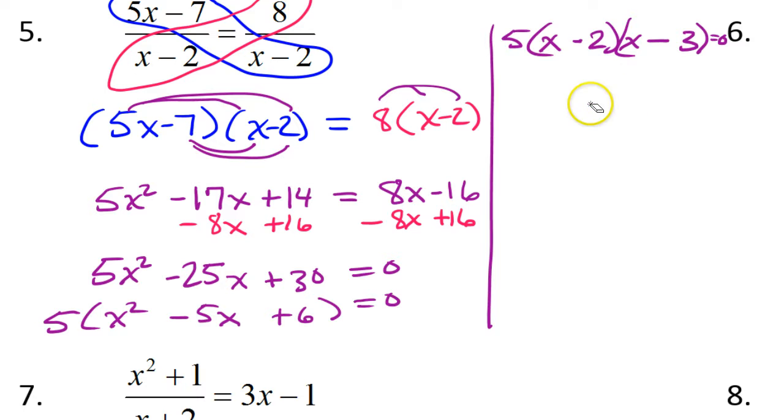So I have now factored it. I can find the solution by setting these factors equal to zero. Now 5 can't equal zero, that's a constant. So it's just a matter of x minus 2 could equal zero or x minus 3 could equal zero. Either one of these will solve the equation. So x could equal 2 or x could equal 3. So these are the solutions, 2 and 3.